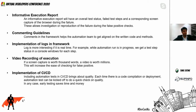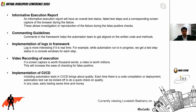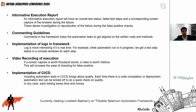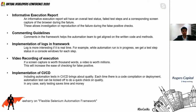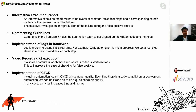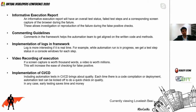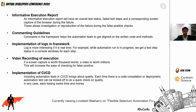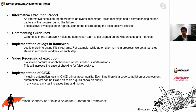For informative execution reports, I expect a report that helps me drill down to the cause and effect of the test and helps me reproduce any bug on the test environment. It should provide screenshots for failures, the test step on which it failed, and the corresponding test case. Commenting guidelines help maintain the framework, and implementation of logs is important — while the test is running, a console showing the step and status helps estimate when the run will complete.